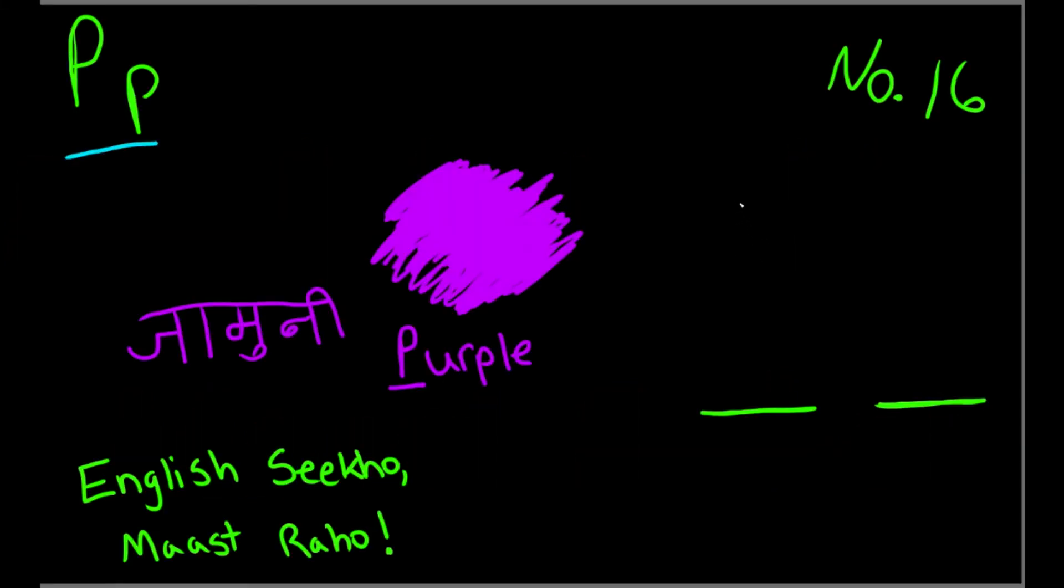Hello and welcome to English. My name is Vikrant Mahajan and today we will learn about P. The letter P comes in the 16th number of the alphabet after O.